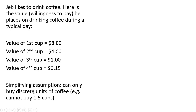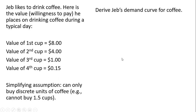We're going to assume that Jeb can only buy discrete units of coffee — he could buy one, two, three, or four cups a day, but he can't buy 1.27 cups or 1.5 cups. So let's derive Jeb's demand curve for coffee given the value he places on each cup.